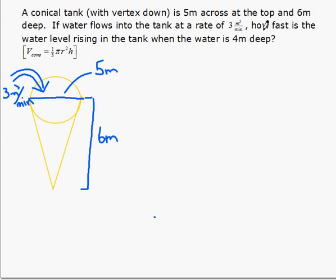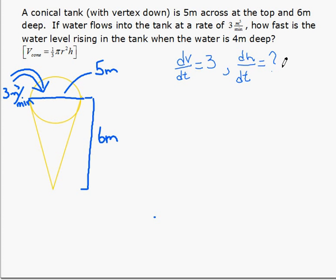We need to know how fast is the water level rising when the water is 4 meters deep. Let's summarize what we're given. We know the change in volume as a function of time is 3 cubic meters per minute. We're looking for the change in height as a function of time — how fast is the water level rising — when h equals 4 meters.